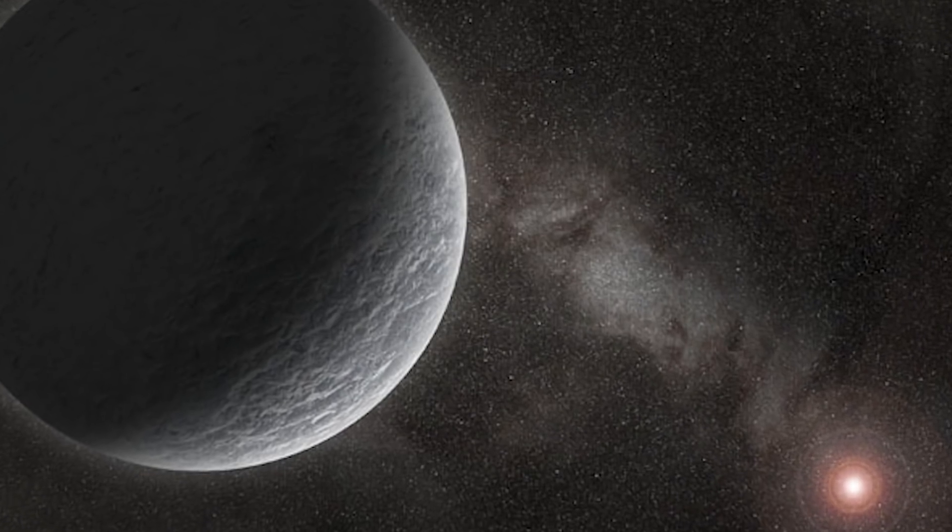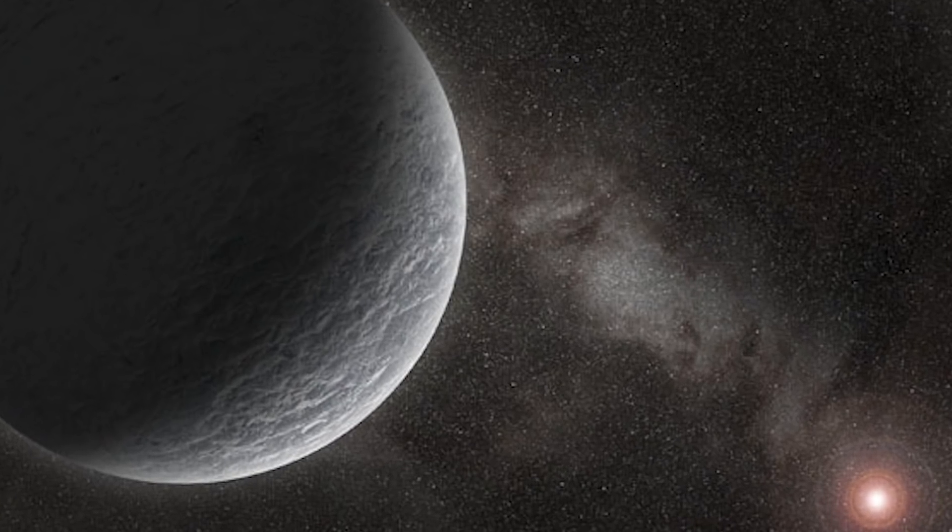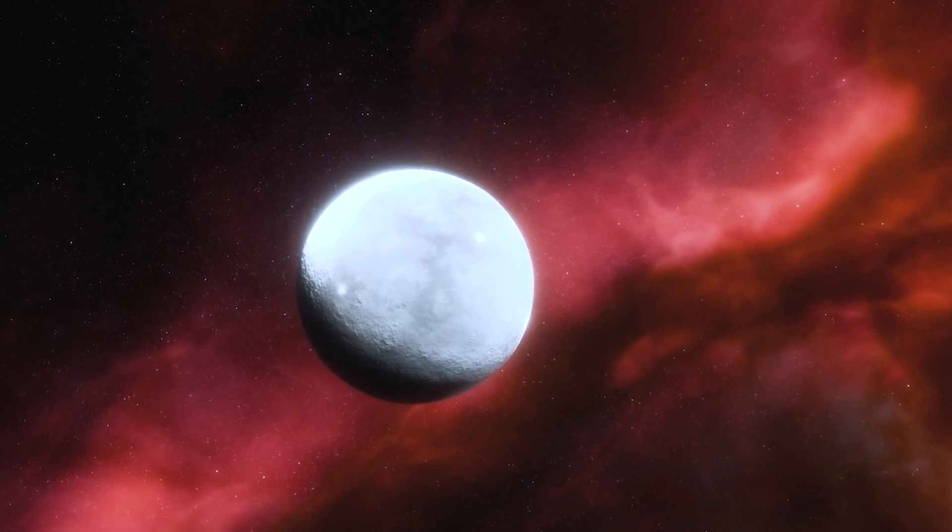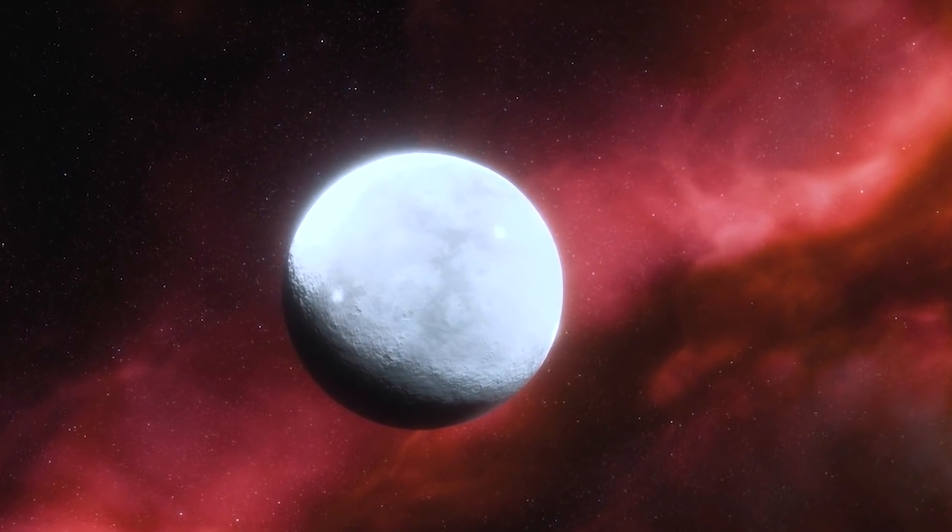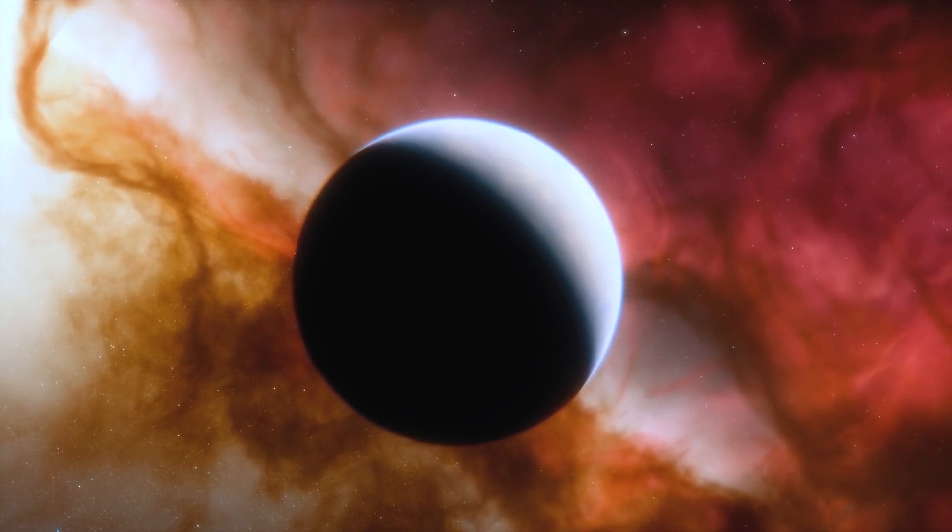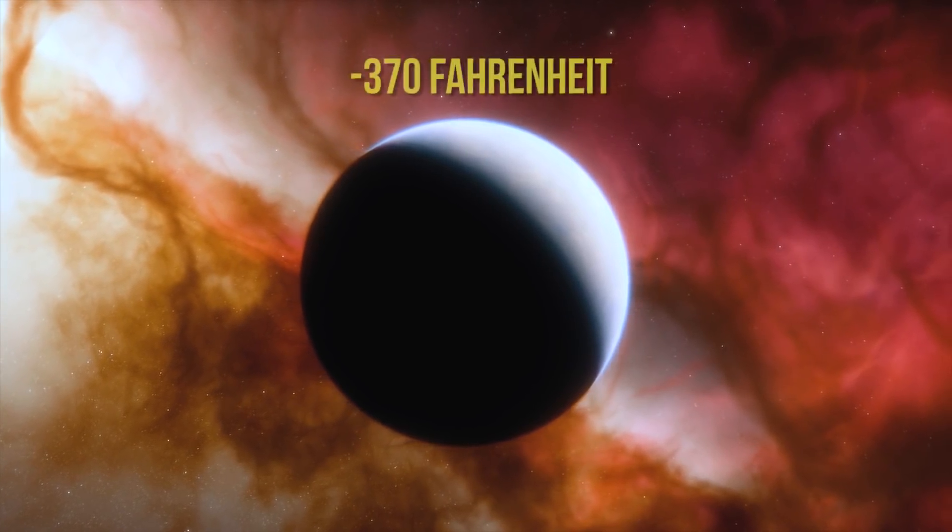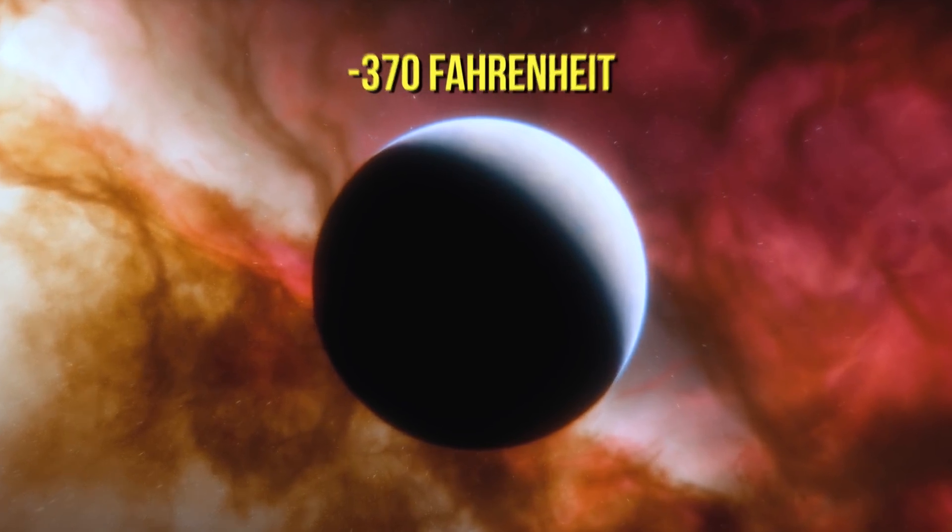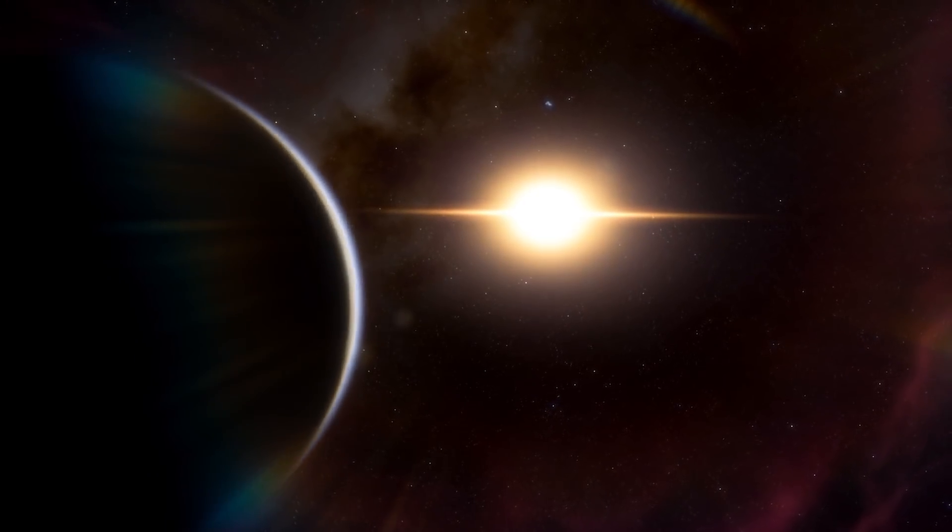So how cold is OGLE-2005-BLG-390-LB? That is hard to pinpoint, however, based on what we know of the planet from our observations, we can calculate that it's about minus 370 Fahrenheit. Which is freezing cold. And that's saying something. For the record, Hoth was not known to be that cold. Otherwise, the Rebel Alliance wouldn't have gone there as a hiding spot. I'm just saying.